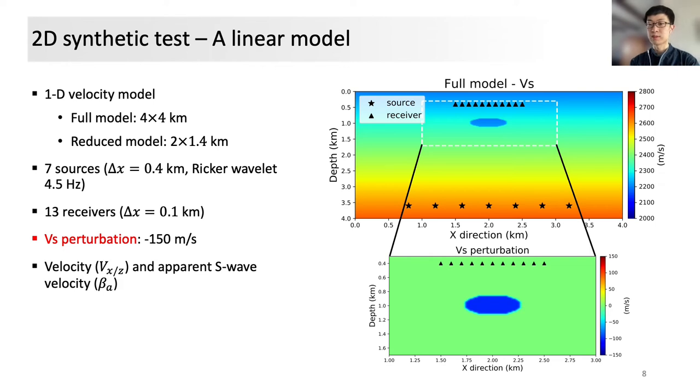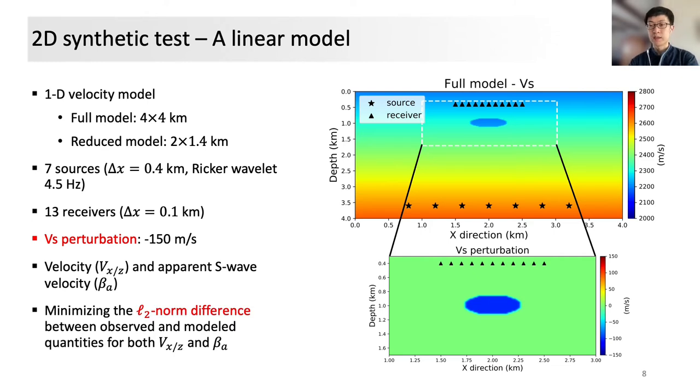We record both particle velocity and apparent S-wave velocities as our observables. To perform localized inversions, we store wavefield along the dashed square beforehand under the known background model so that we can apply the wavefield injection method to efficiently simulate local wave propagation within the targeted regions. We choose the classic L2 norm misfit functions to iteratively minimize the difference between modeled and observed data.